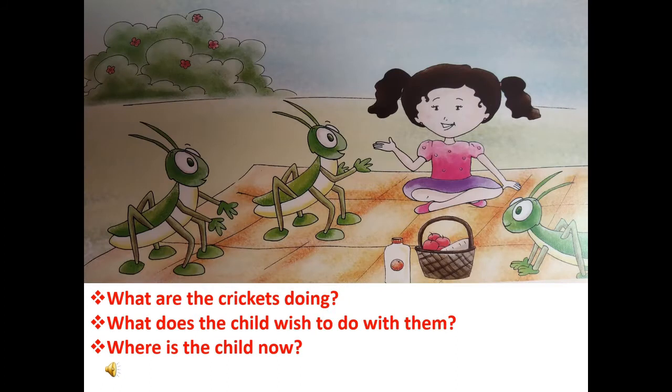Now children, moving to the next page. First question: what are the crickets doing? The insects in this picture are called crickets and they are doing something. Try and answer what the crickets are doing. The crickets are trying to rub their hands. When a cricket makes a sound, the sound comes out by rubbing of the feet and hands of the cricket.